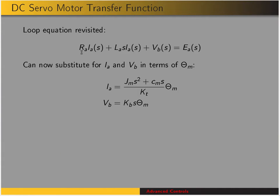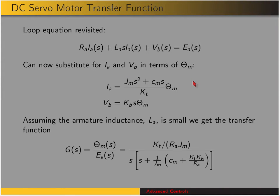Now let's revisit the loop equation from a previous slide. We now have an expression relating the armature current to the motor displacement, and from the back EMF expression, we have VB related to the motor displacement. We can substitute these in and relate motor displacement to applied voltage. We'll also assume that the armature inductance LA is small relative to the other terms, so we'll eliminate that term and get the transfer function relating motor displacement to applied voltage. The constant terms include the motor torque constant, armature resistance, effective moment of inertia, effective damping, and the back EMF or speed constant.